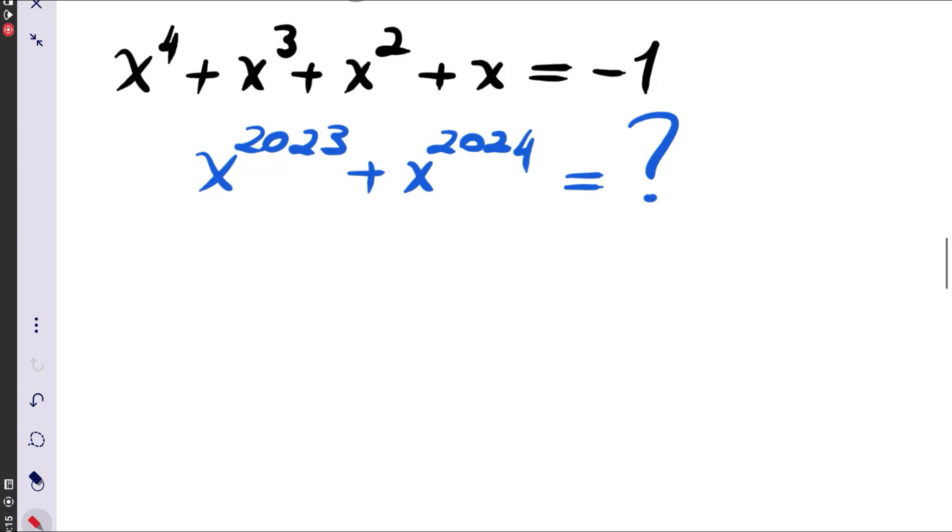Let's try to just rewrite this as x to the power 4 plus x cubed plus x squared plus x and plus 1 is equal to 0.